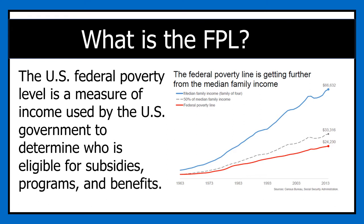We need to talk about the different definitions of poverty — who gets to decide what poverty is and what that can mean for people in poverty. One definition is the Federal Poverty Line. The FPL is the definition the government uses to measure poverty. Their definition is the most important because it decides who gets subsidies, who gets benefits, who gets programs. What the government decides is poor gets to decide who gets help and who can be lifted out of poverty. However, almost nobody agrees that the FPL is a good measurement.